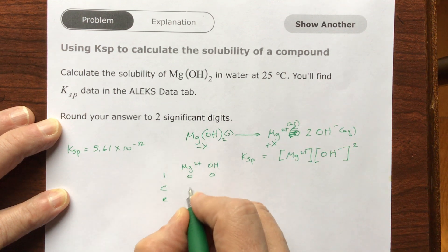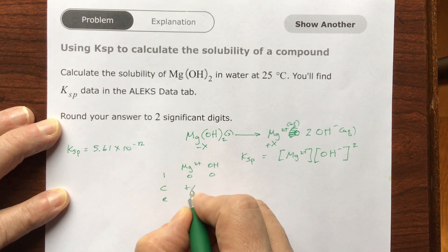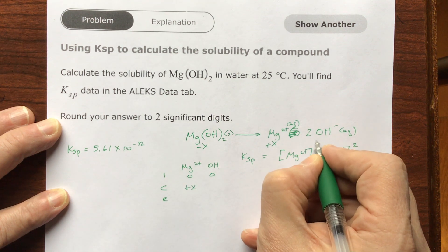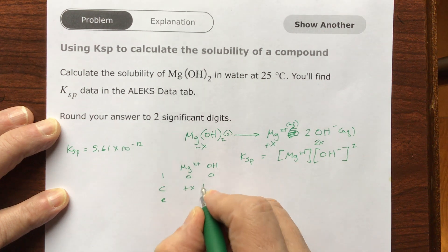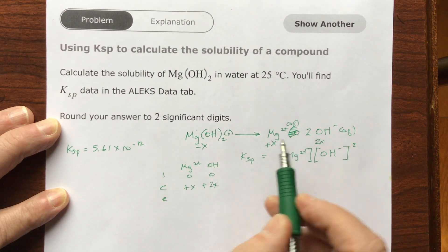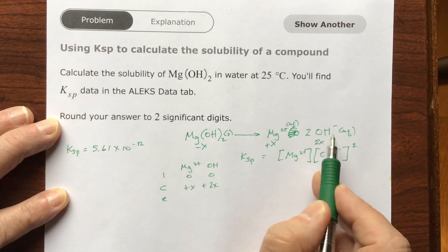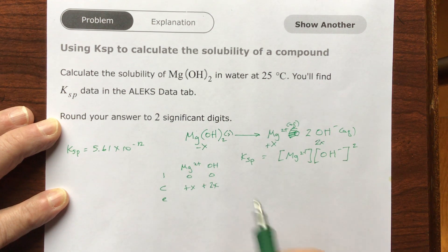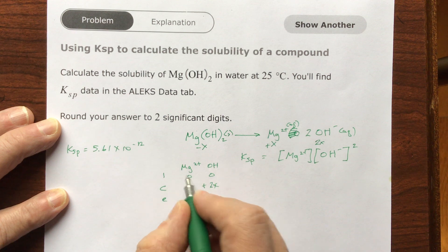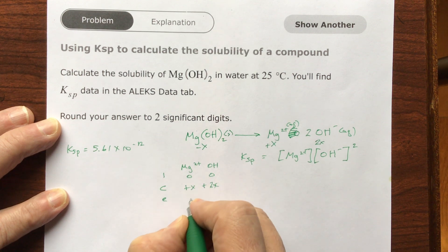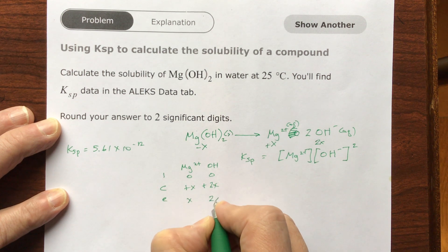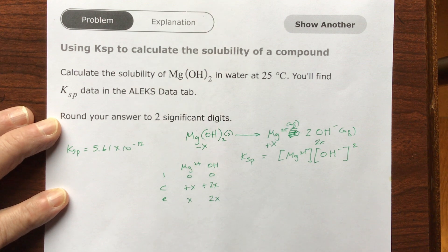But can you see that if this breaks apart, I'm going to get two hydroxides for every molecule that goes away? So that means this is going to be positive X, and this is going to be positive 2X. For every molecule of this salt that goes away, I'm going to get two hydroxide ions produced. Now add them up, and that's the equilibrium. So this is going to be X, and this is going to be 2X.